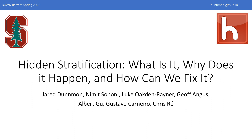First, I'll cover a study jointly done with Luke Oakden Rayner and Gustavo Carnero from the University of Adelaide, where we demonstrate the importance of hidden stratification in tasks like medical imaging where the cost of failure are high, identify several important reasons why it may happen, and propose several different approaches by which it might be mitigated in practice. In the second portion of the talk, I'll discuss our most recent directions where we propose a method for mitigating hidden stratification by building models that are more robust to fine-grained variations that are not captured by the class labels.